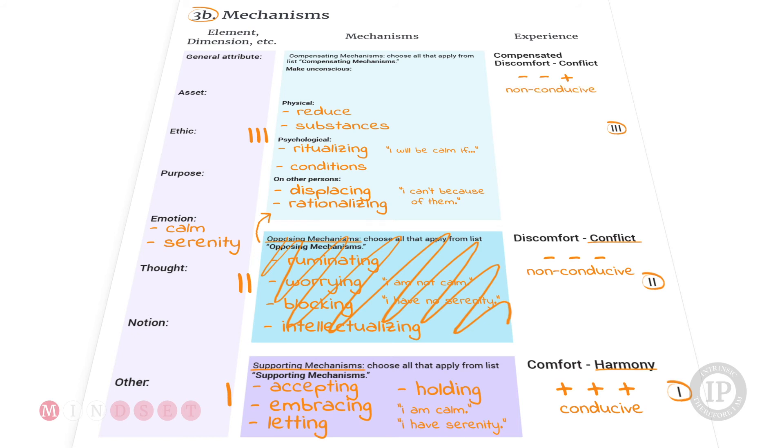So this template can be used, it's just a way to understand, but it can be used against also a value, an ethic, a purpose, a notion. And to understand how we may be using these mechanisms at level two and three and eventually let go of them.